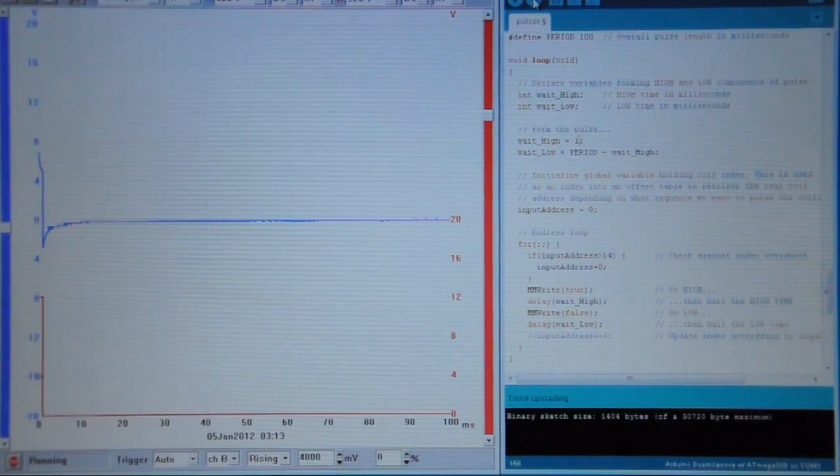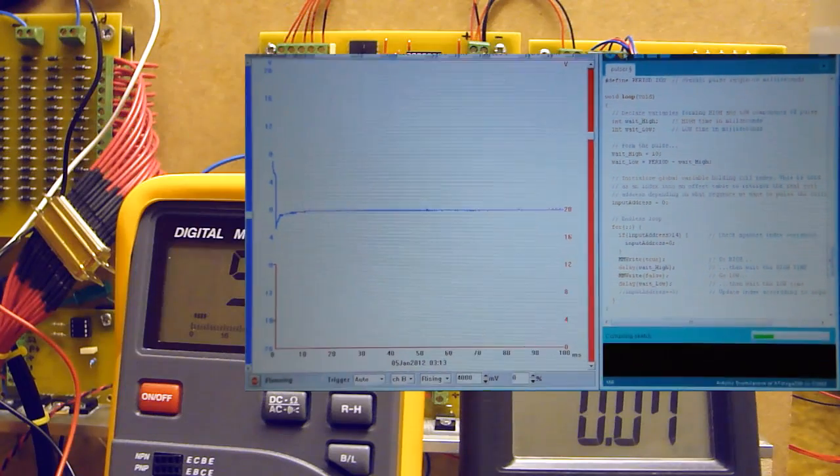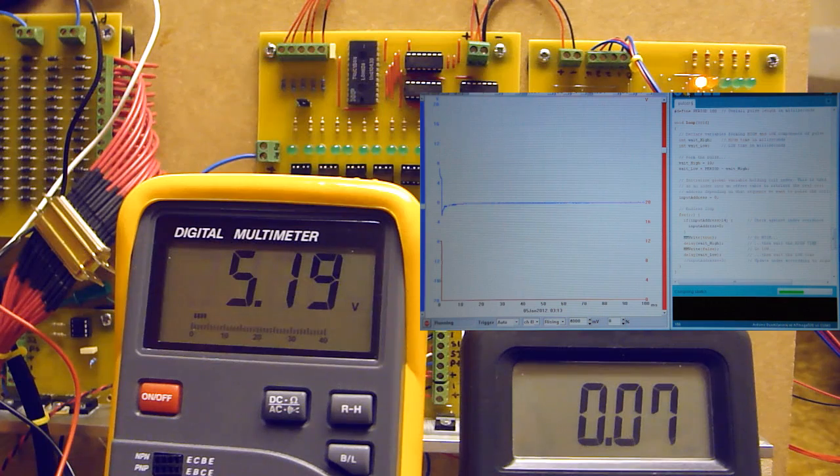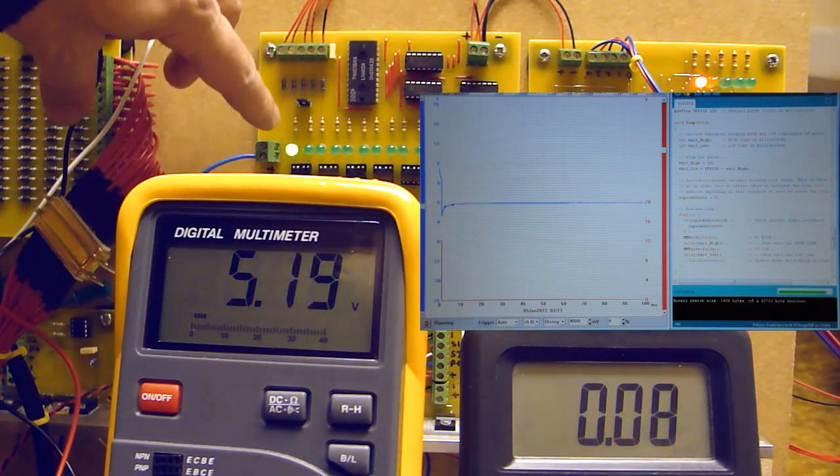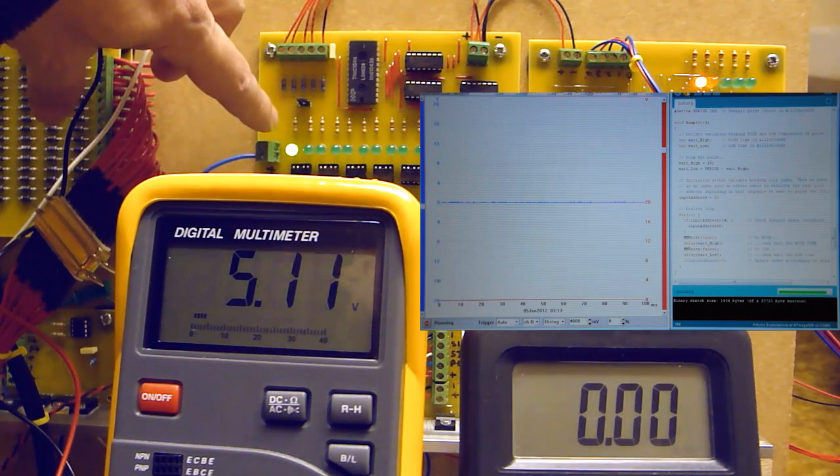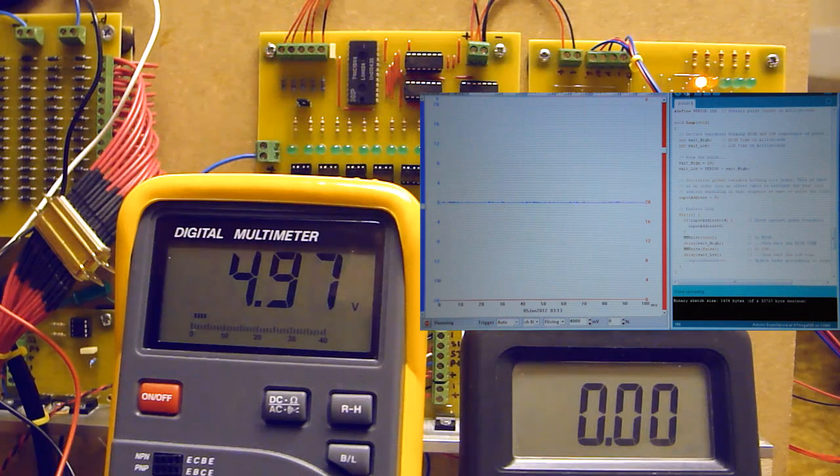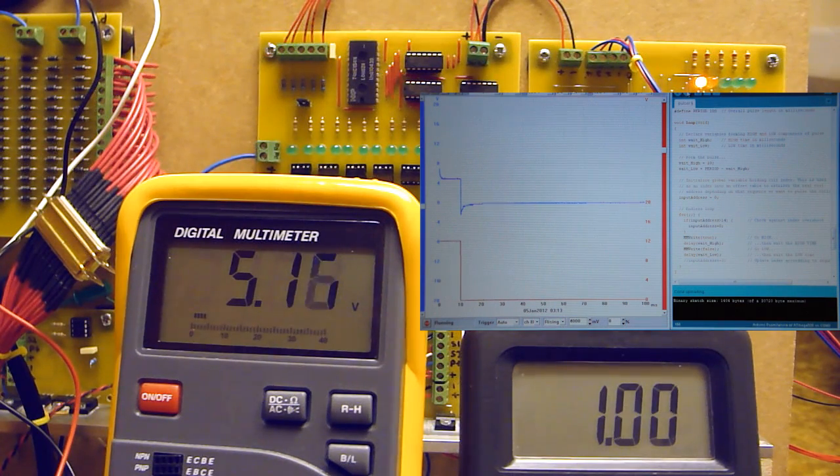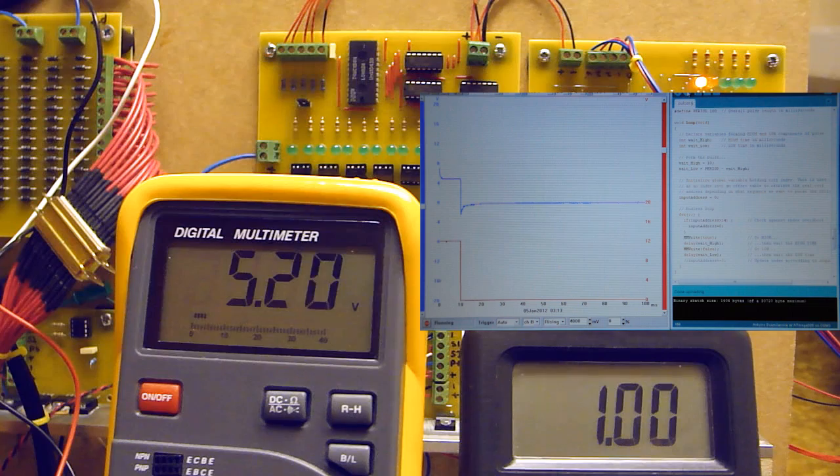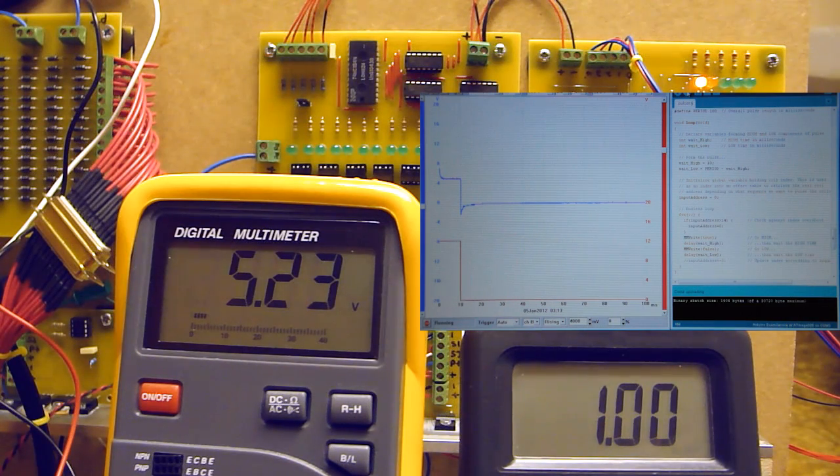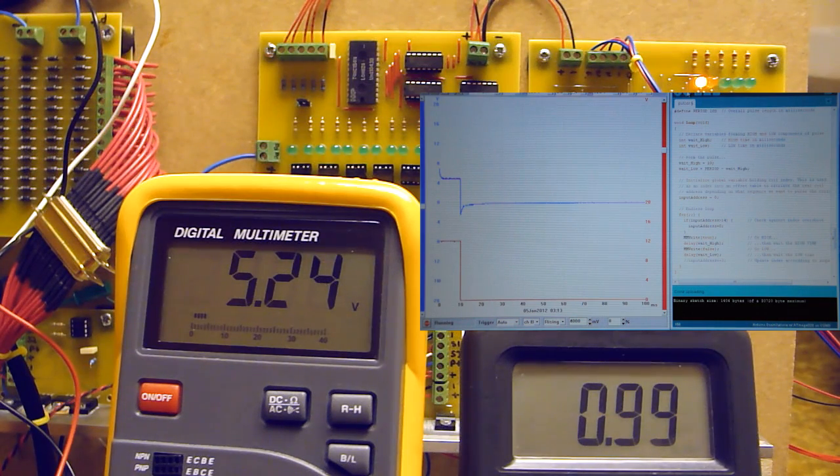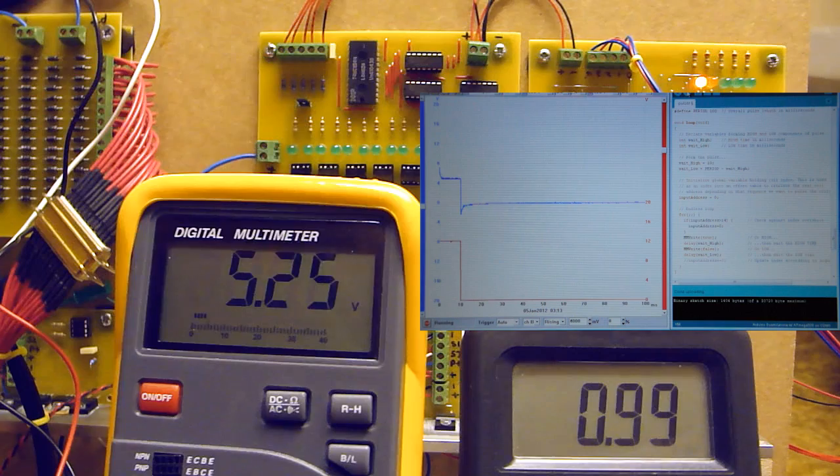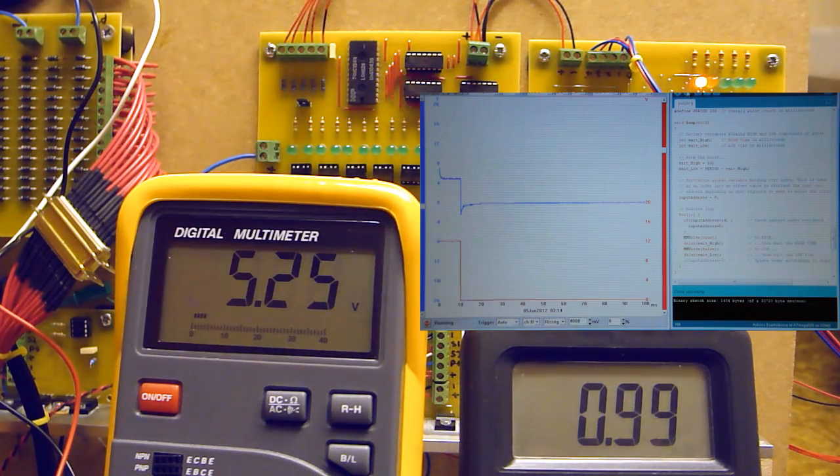I'll change that to 10 milliseconds and reprogram that. I'll ask you to note that whilst reprogram takes place, the amp draw from the battery should go down to zero. And whilst the Arduino is being programmed, this light comes on. There we are. The amp draw is down to zero. And this is critical because the amp draw from the battery must go down to zero whilst reprograming takes place. In other words, amp draw from the battery must go down to zero whilst any form of interruption for the power supply on the Arduino or the control circuitry takes place. It's a safety feature as I found out to my cost.